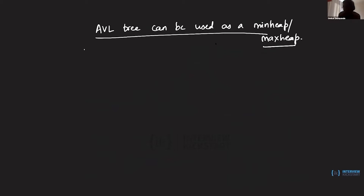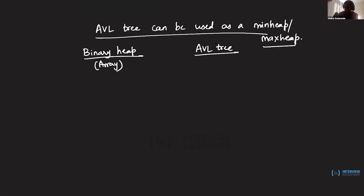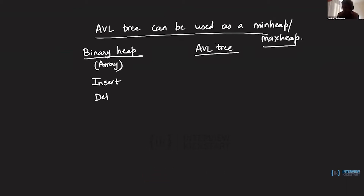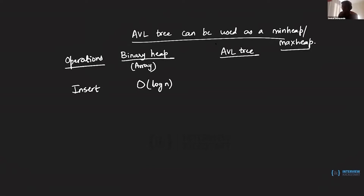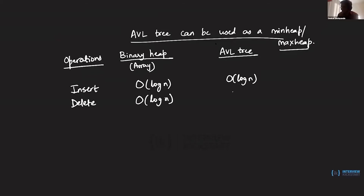Let's compare a binary heap with an array-based implementation — done earlier in sorting — with an AVL tree-based implementation. For heap operations: insert on a binary heap takes O(log n) time, and an AVL tree also takes O(log n) time. Delete on a binary heap takes O(log n) time, and AVL tree deletion also takes O(log n) time.